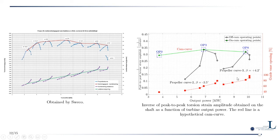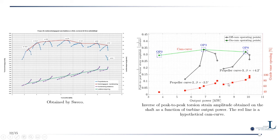Besides the strain correlation, torsion measurements on the shaft showed potential as a good candidate for index testing on Kaplan turbines. The inverse of peak-to-peak torsion strain amplitude (Y-axis) versus output power (X-axis) shows local maxima for each propeller curve corresponding to the best efficiency point, with red guidelines indicating the trend. This result suggests that torsion shaft measurements could be used to update the index test chart for Kaplan turbines.